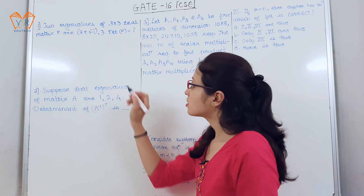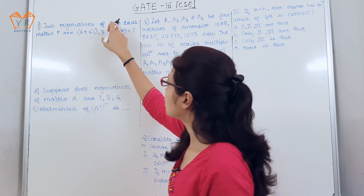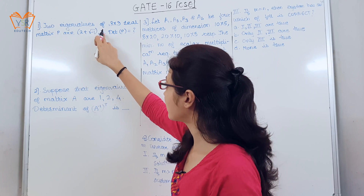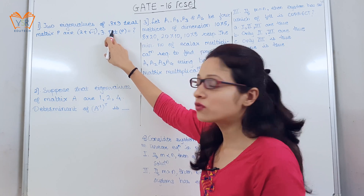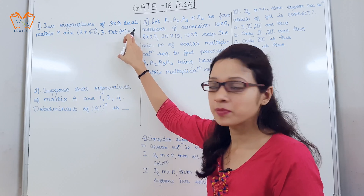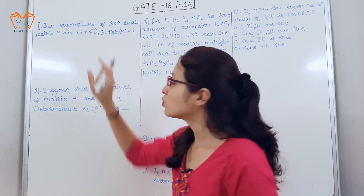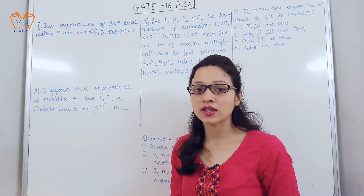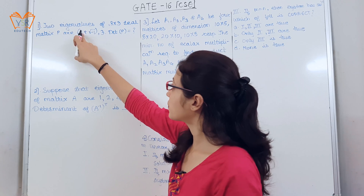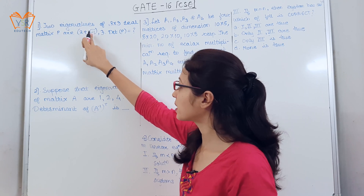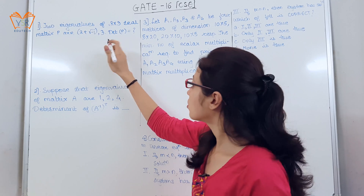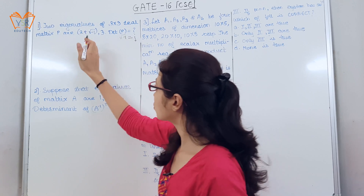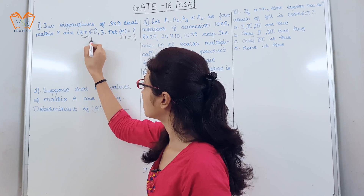The first example: two eigenvalues of a 3×3 real matrix P are 2 plus root of minus 1 and 3. For a 3×3 matrix there will be 3 eigenvalues. We know the value of root minus 1 is j, so this value becomes 2 plus j.